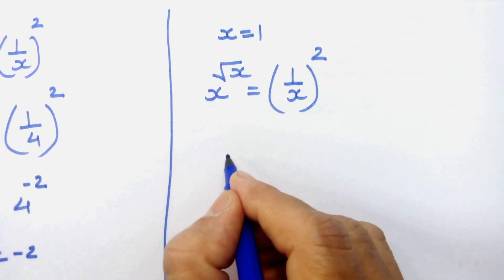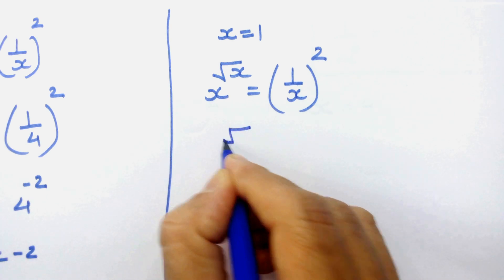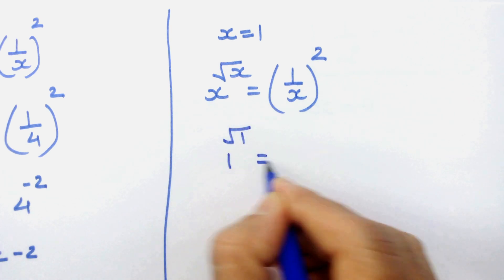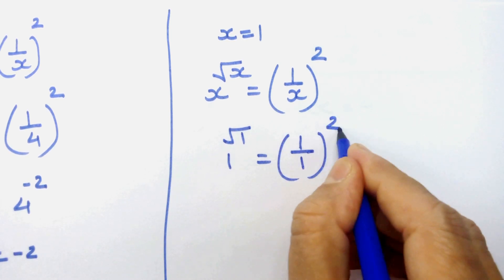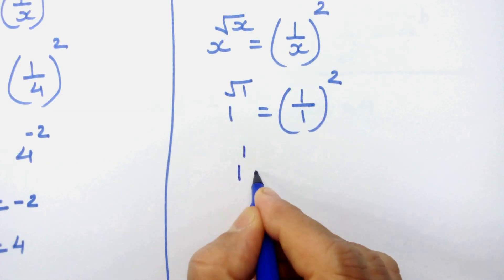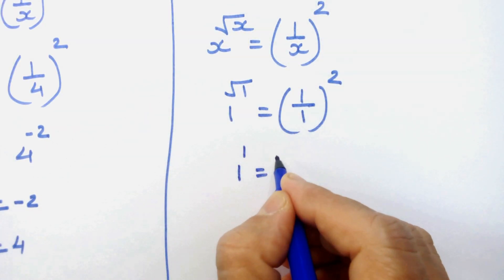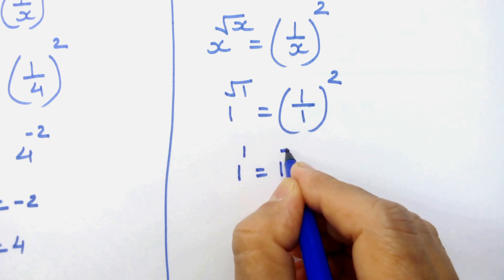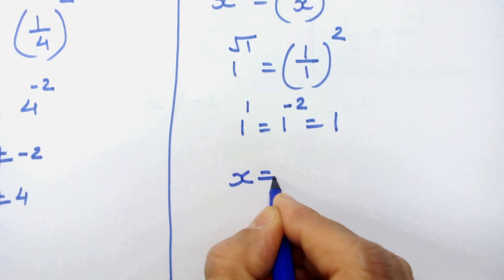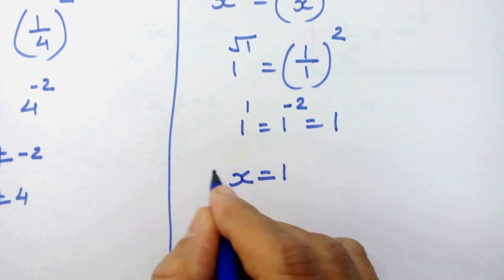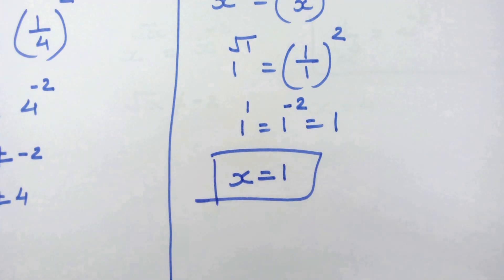We write 1 raised to square root of 1 equal to 1 upon 1 whole squared. 1 squared equals 1, and 1 raised to any power equals 1. Both sides equal 1, so the only answer is x equals 1. Thanks for watching.